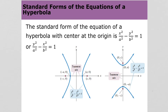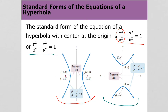The standard form of a hyperbola with its center at the origin is x² over a² minus y² over b² equals 1. That is for the situation where the transverse axis is along the x-axis. Notice when it's along the x-axis that the x² over a² comes first. You have to make sure that if it's along the x-axis, the x² comes first, and then a² is on the bottom.